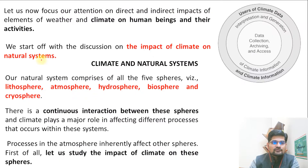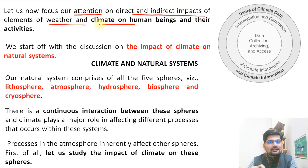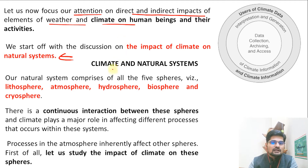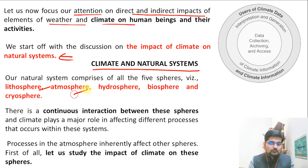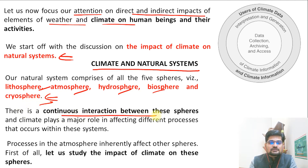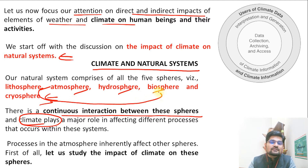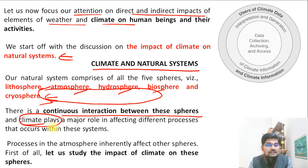Now let's focus on the direct and indirect impacts of the elements of weather and climate on human beings, and accordingly where this knowledge can be applied. We start with the impact of climate on natural systems. Our natural system comprises these spheres: lithosphere, atmosphere, hydrosphere, biosphere, and cryosphere — the frozen sphere. There is a continuous interaction between these spheres, and climate is an important linkage that connects all of them. Climate is one of the processes that connects all these systems together — that's where climatic knowledge is important.